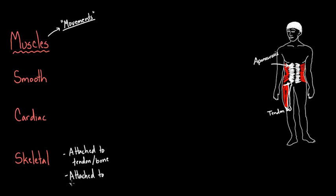You can start identifying skeletal muscles — they're usually the muscles that you can see on your body. That's the actual name for them. But what about the other two? What about cardiac and smooth muscle?